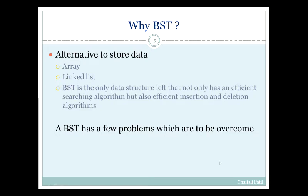Why BST? To store ordered data, the alternative way is an array. We can store ordered data using an array, and the most efficient searching technique for an array is binary search if the data is sorted. But the disadvantage of an array is that for insertion and deletion of a record, a shifting is required. Another solution is to use a linked list to store ordered data. Insertion and deletion are easy in a linked list but it is inefficient for searching.